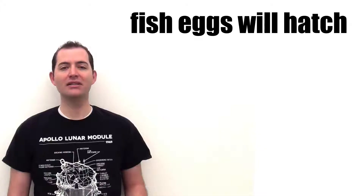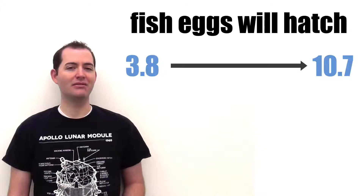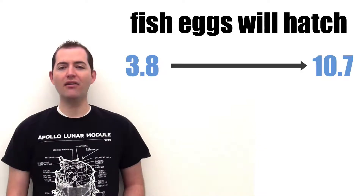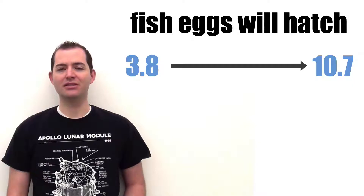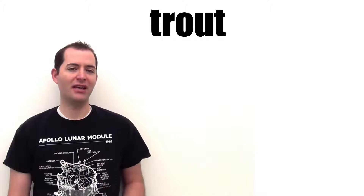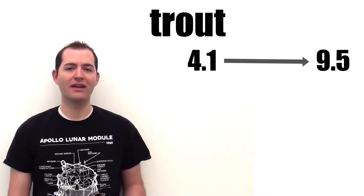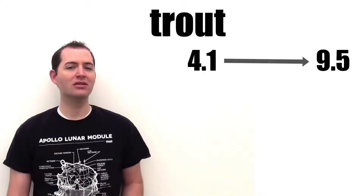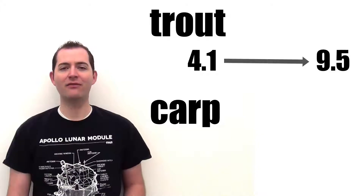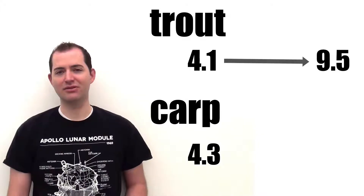For example, most fish eggs will hatch anywhere inside the range of 3.8 to 10.0. However, on the edges of that range, most of the hatched fish are deformed. Most trout can survive a pH range from 4.1 to 9.5, yet most carp will die at a pH of 4.3 after 5 days of exposure.